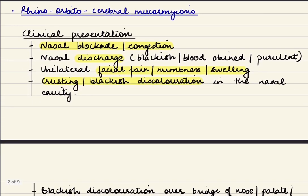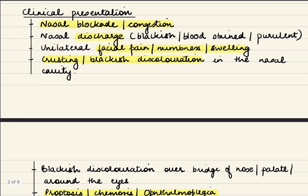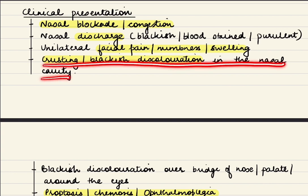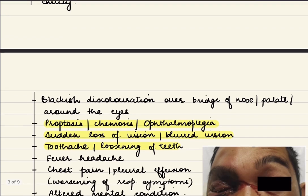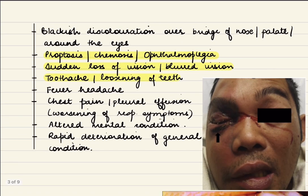How can rhino-orbital-cerebral mucormycosis present? It usually starts in the nose with nasal blockage or congestion. The patient can have discharge from the nasal cavity which can be blackish, blood-stained, or purulent. The patient can have facial pain, numbness, or swelling which is usually unilateral.